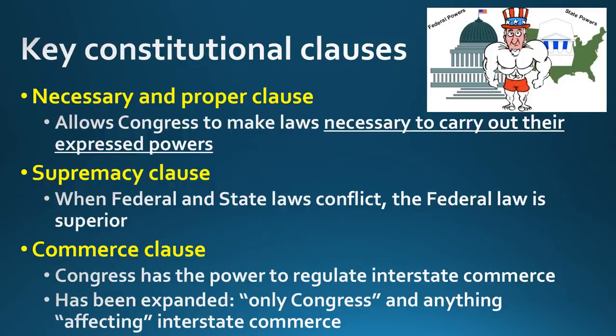Over time, the interpretation of the Commerce Clause has been expanded. In Gibbons versus Ogden, it was established that only Congress could regulate interstate commerce — so now states can't do it either. And then in Wickard versus Filburn, it became that anything affecting interstate commerce can also be regulated by Congress. So it doesn't even have to be interstate commerce anymore — it just has to affect it. For example, a restaurant owner operating within a single state is engaging in intrastate commerce, but you going to that restaurant affects interstate commerce, which means Congress can make laws about it.